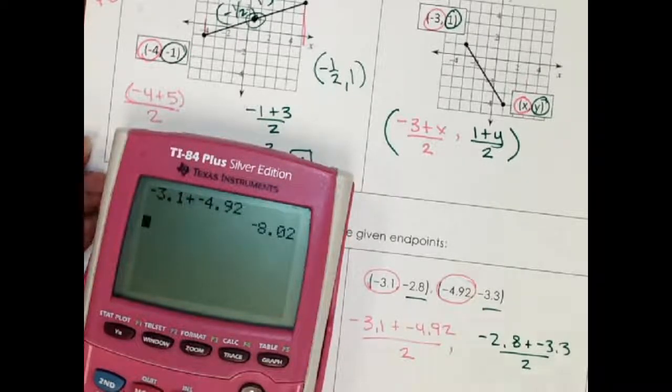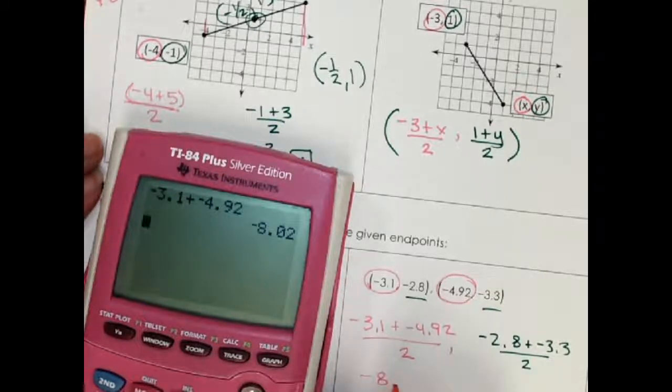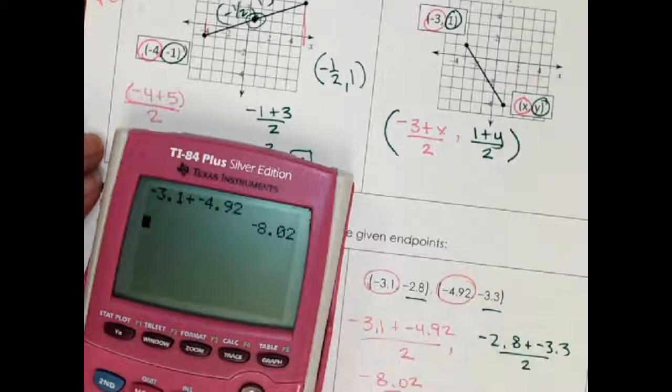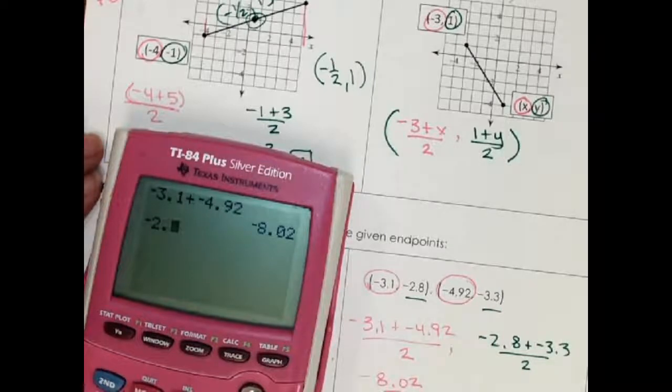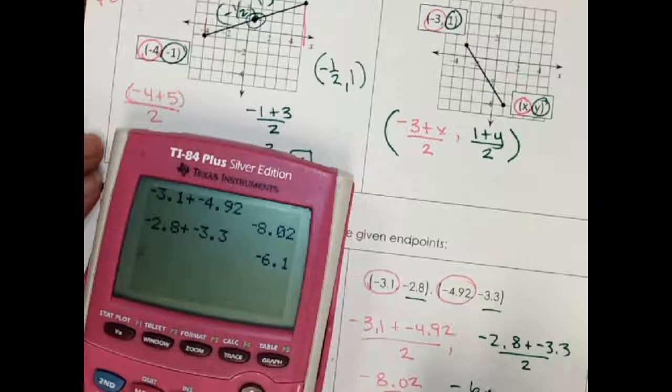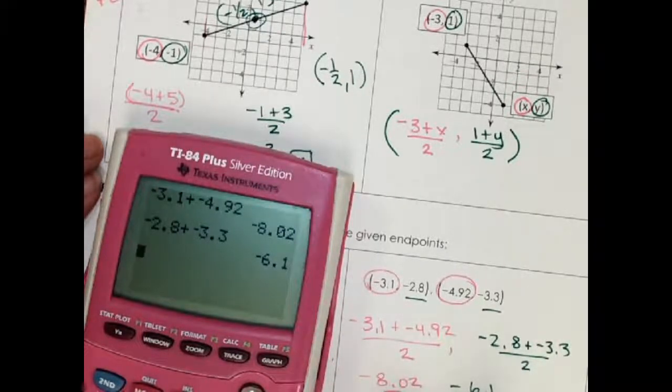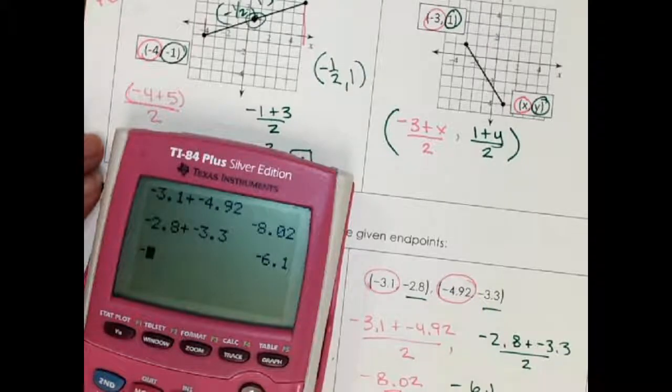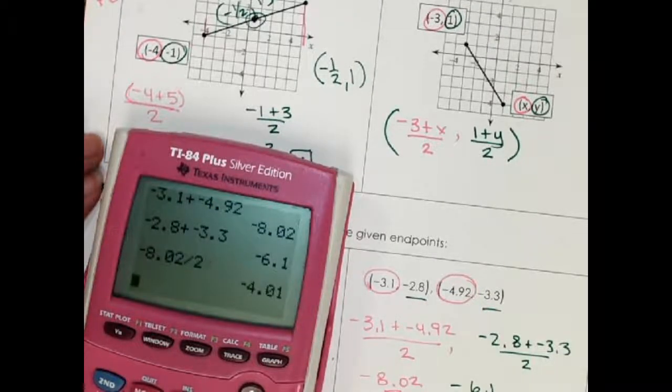I still do the top part first and I get this on top. I'm going to do the y part, then I can divide this. It's already a decimal so I should go ahead and divide it. That's the x part. I'm going to do the same thing on the y part.